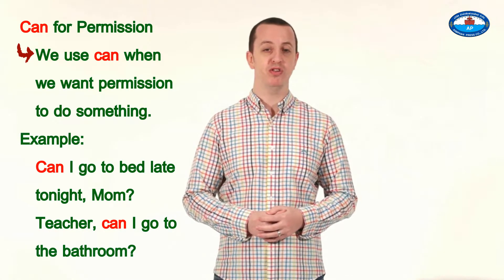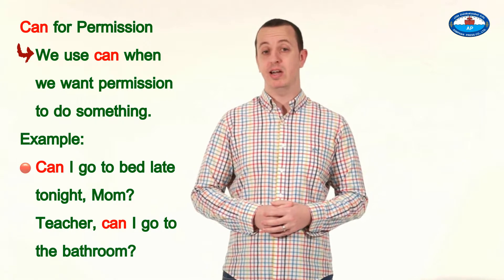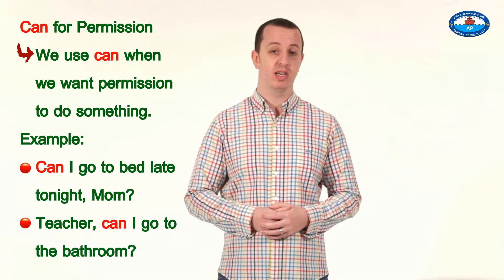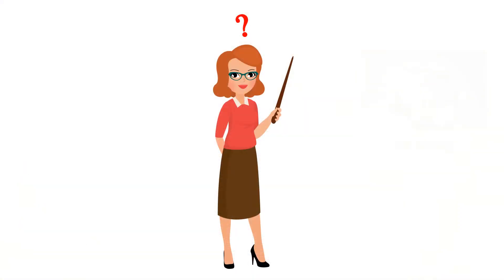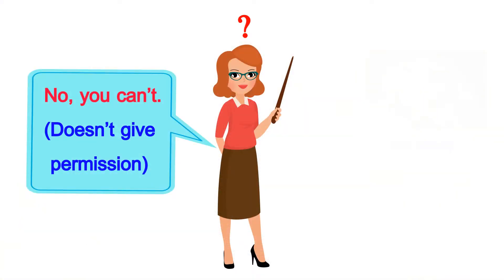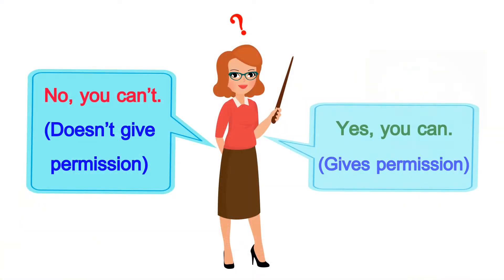The next thing we're going to look at is the verb 'can'. We use 'can' when we want permission to do something, such as: can I go to bed late tonight, mom? Or: teacher, can I go to the bathroom? The teacher may answer you: no you can't, or yes you can. So the teacher gives you permission or doesn't give you permission.